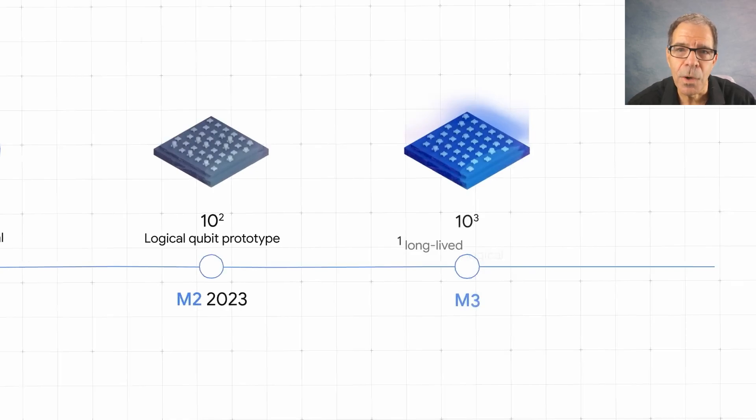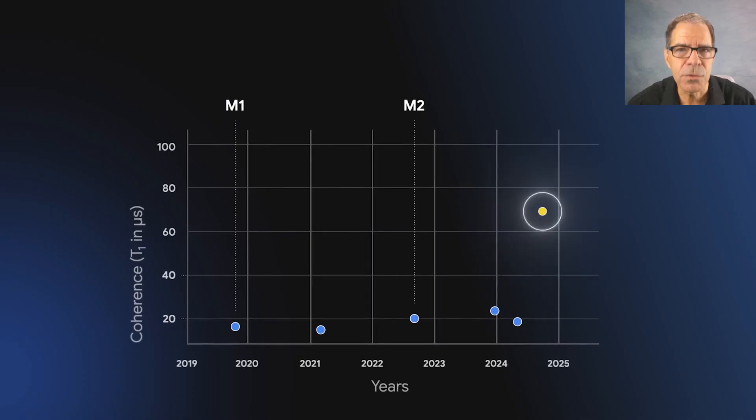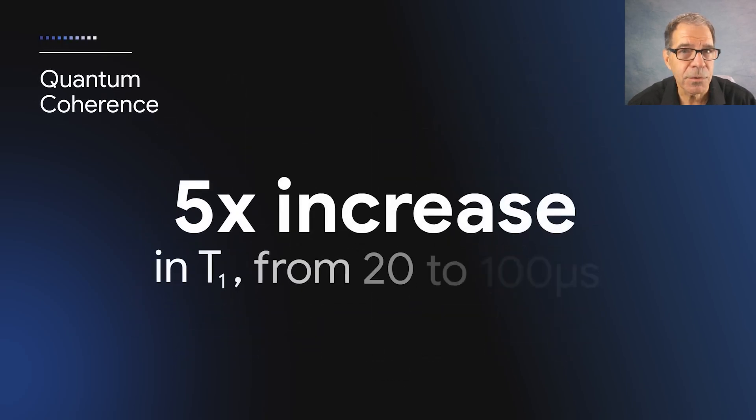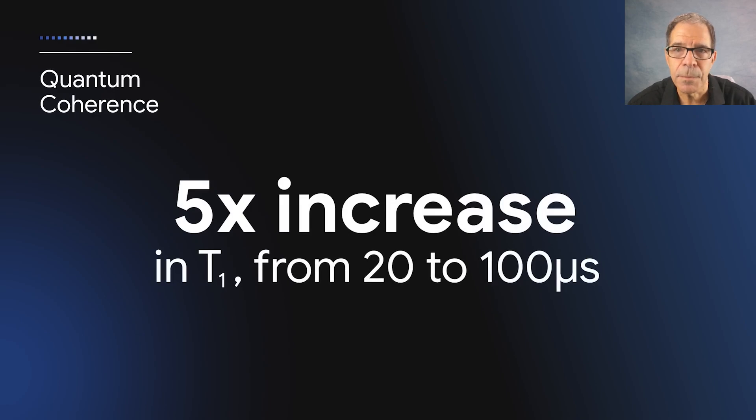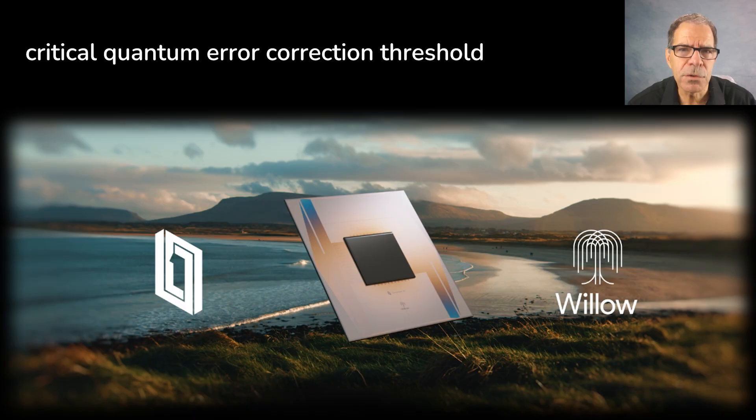Specifically, one of the key milestones of Willow was a 5x growth in the length of time that qubits maintain their intended state, increasing from 20 microseconds with Sycamore to 100 microseconds with Willow, which is a key reason why Willow is now able to operate below what's known as the critical quantum error correction threshold.